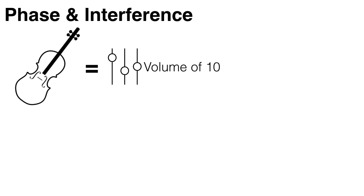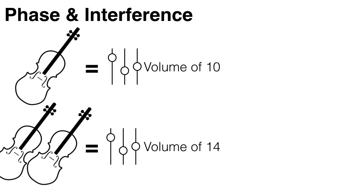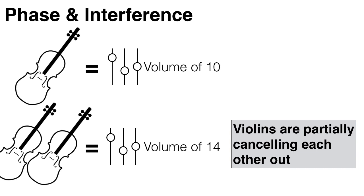Now if we add another violin playing the same note, then we have doubled the number of violins playing, but we notice that the volume isn't twice as loud. It's definitely louder, but it's nowhere near twice as loud. In fact, the loudness level is now roughly at fourteen. This is because the sound waves produced by the second violin are partially cancelling out the sound waves produced by the first violin.